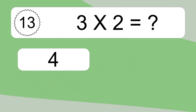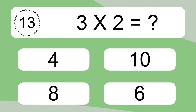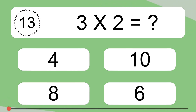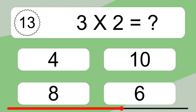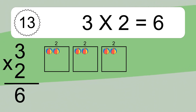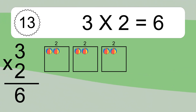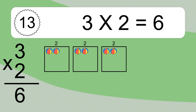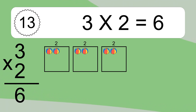3 times 2 equals what? 3 times 2 equals 6. We have three boxes and each box has two colorful balls inside. If you count all the balls in all the boxes together, you will have three times two balls. This equals six balls.